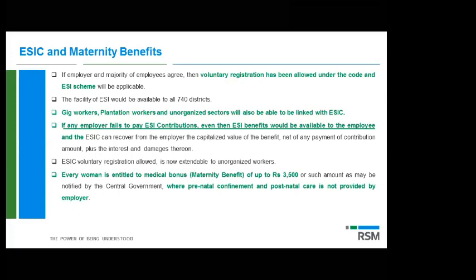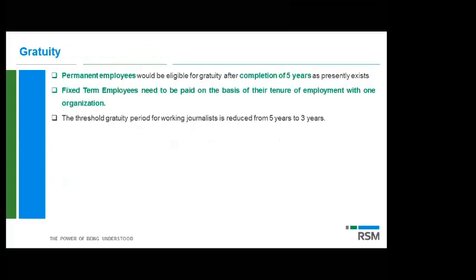Every woman is entitled to a medical bonus — maternity benefit of up to 3,500 rupees or such amount as notified by the government, where prenatal, confinement and postnatal care is not provided by the employer. For gratuity, provisions remain the same for permanent employees. For fixed term employees it will be proportionate to the specific term — one year means gratuity for one year, two years means two years; they need not complete five years to become eligible. For working journalists, the threshold for gratuity has been reduced from five to three years.